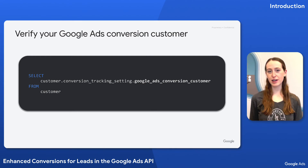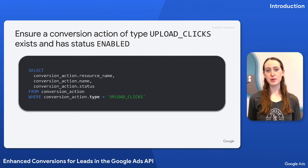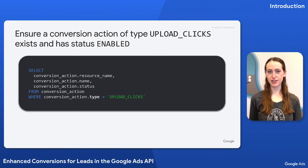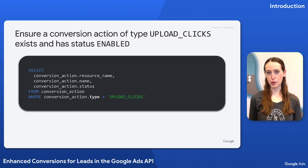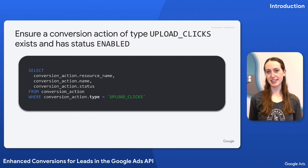You can verify which account is your Google Ads conversion customer by querying for the Google Ads conversion customer. Once you know your conversion customer ID, you can query that account to verify whether there is already a conversion action of type Upload Clicks and whether it's enabled. If your Google Ads conversion customer doesn't yet have an Upload Clicks conversion action, follow the instructions linked in the video description to create one.